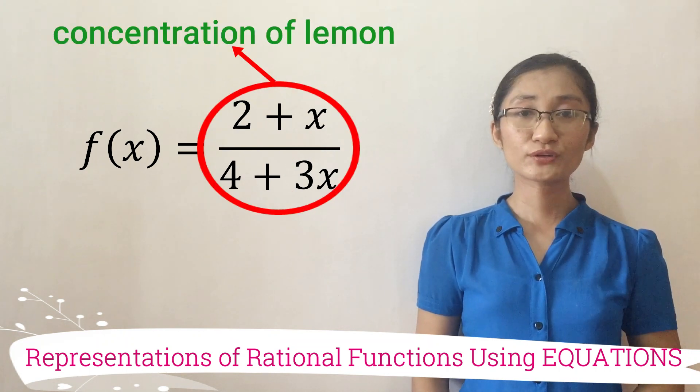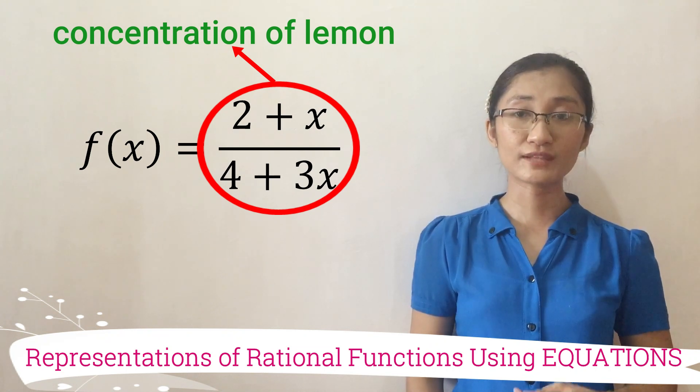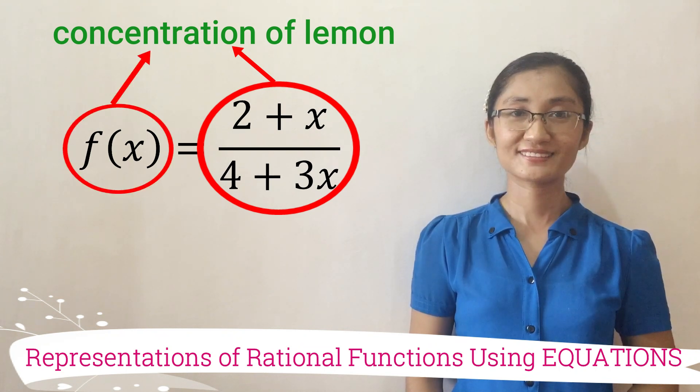2 plus x all over 4 plus 3x is the concentration of lemon, or f of x, and that's a ratio.